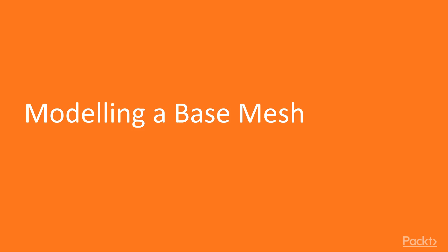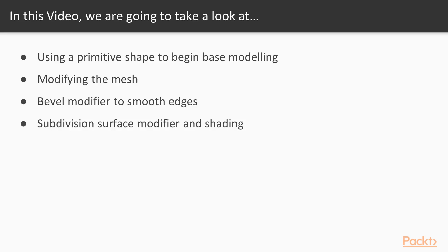In this video, we will be going over how to set up the base mesh for our character, which we will later add more detail to. We will learn how to use a primitive shape to create a base model, then modify it, add a bevel and subdivision surface modifier, and lastly add shading to smooth it off.